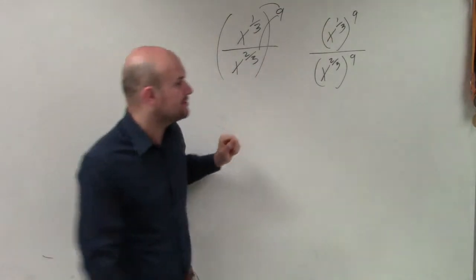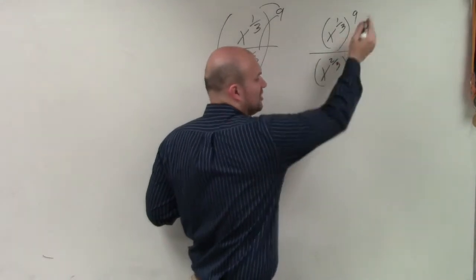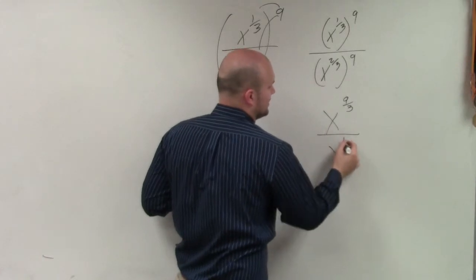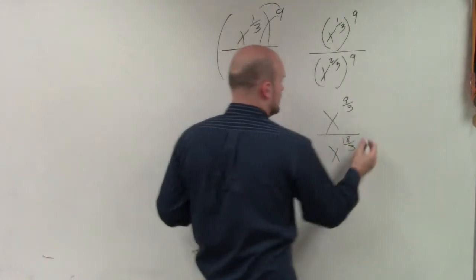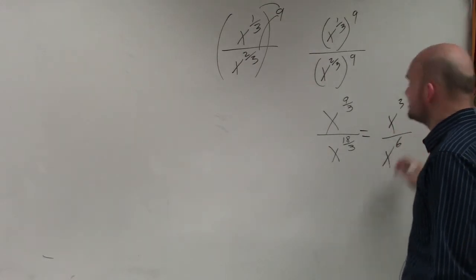So 1/3rd times 9 is going to be, you're just multiplying these. So it would be 9/3rds over x to the 18/3rds. Well, that equals x to the 3rd over x to the 6th.